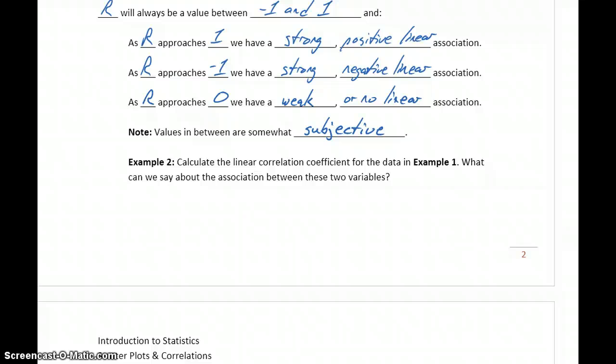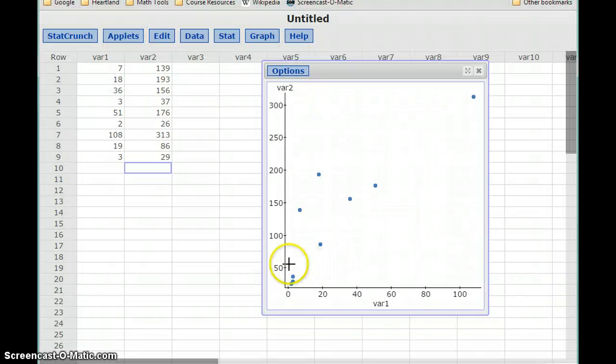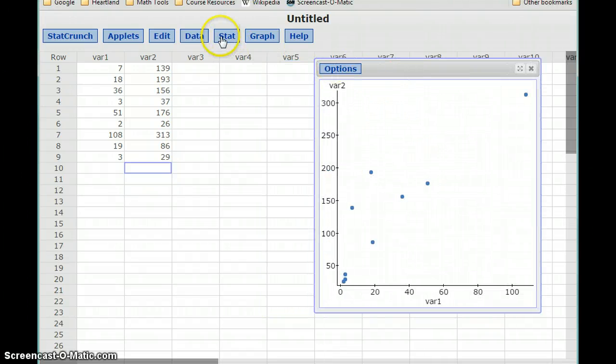So in example 2, we want to calculate the linear correlation coefficient for the data that we had in example 1, and use that to see what we can say about the association between these variables. So here's the scatter plot that we already constructed. Now what we want to do is, in addition to that, calculate the correlation coefficient.